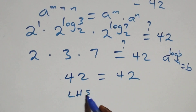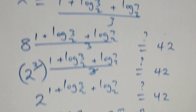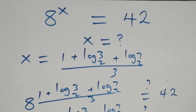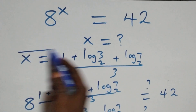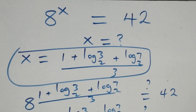The left-hand side equals the right-hand side, so we conclude that x equals (1 + log₂3 + log₂7) / 3 satisfies the given problem. Thank you for watching. Subscribe for more videos, turn on the notification bell, share this video, give it a thumbs up, and put your comment. See you next time, bye for now.